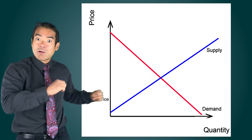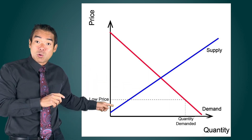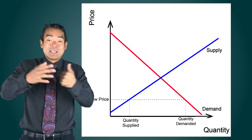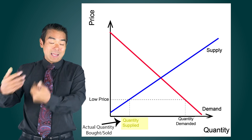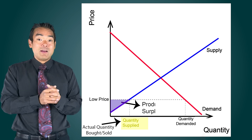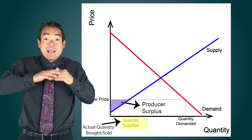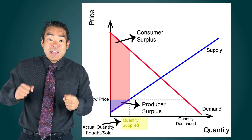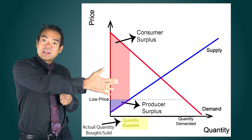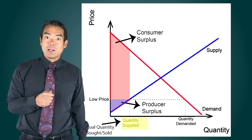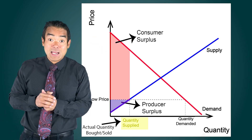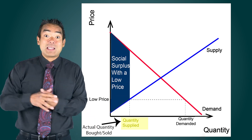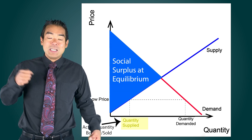If market price is below equilibrium price, then quantity demanded exceeds quantity supplied, but the limiting factor is quantity supplied — it doesn't matter how much people want to buy, you can only buy what's actually for sale. Producer surplus is the area above supply and below price to the left of the amount they sell. Consumer surplus is the area below demand, above price, and to the left of the amount consumers are actually able to buy. Again, adding these two areas gives social surplus, and the area is clearly less than what it would be at equilibrium price and equilibrium quantity.